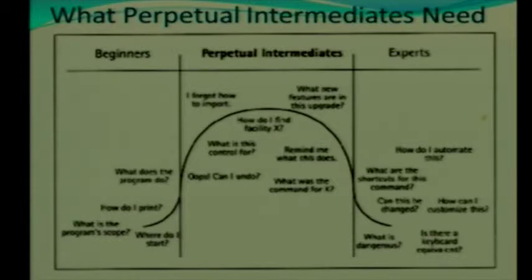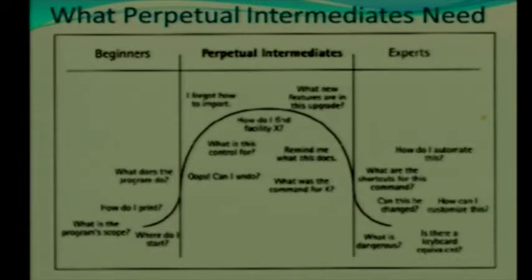For perpetual intermediates, perhaps the most popular question is: How can I undo? Others include: What is this control for? I forgot how to import. How do I find feature X? What new features are in this upgrade so I can justify buying it? Remind me what this specific item does. And what was the command to do this?